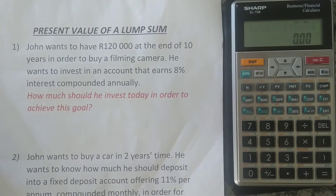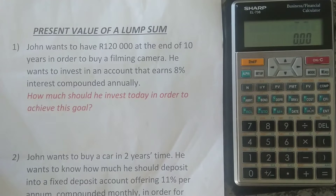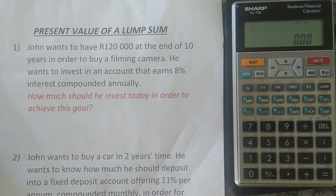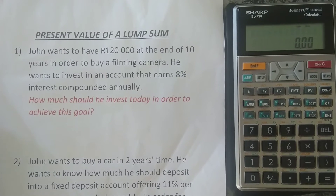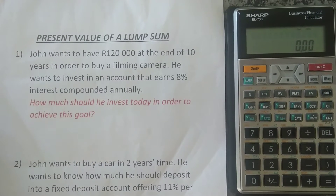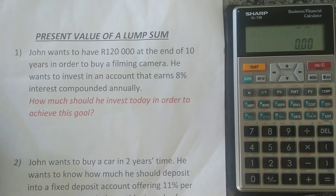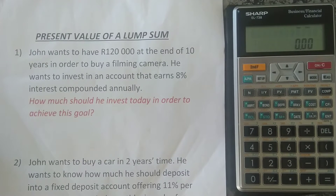The first example says John wants to have 120,000 rand at the end of 10 years in order to buy a filming camera. He wants to invest it in an account that earns 8% interest compounded annually. The question is: how much should he invest today in order to achieve this goal? The first thing I always say when doing this kind of calculation is to pay attention to the compounding, because it affects your interest rate, your number of compounding periods, and as a result, your answer.